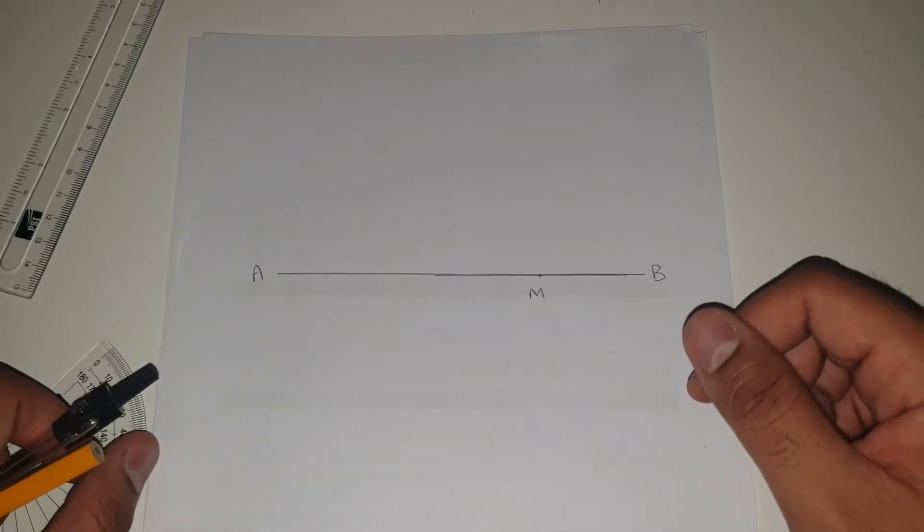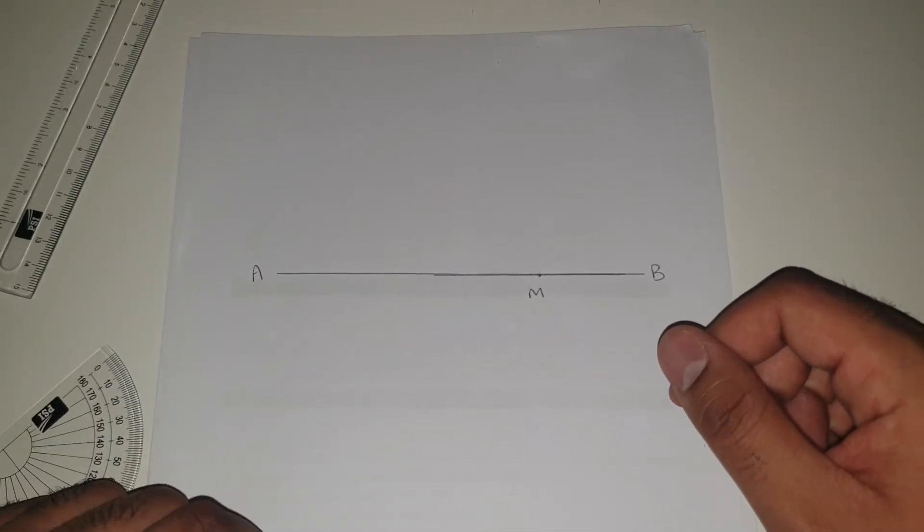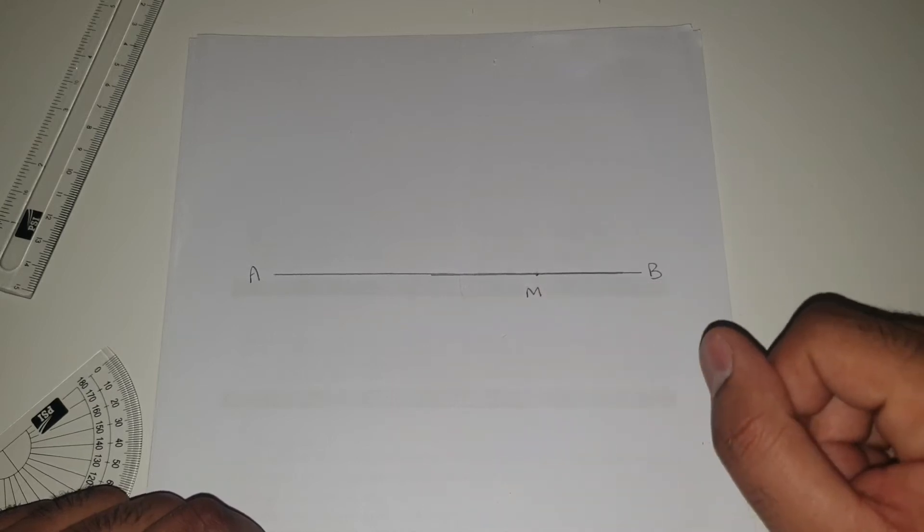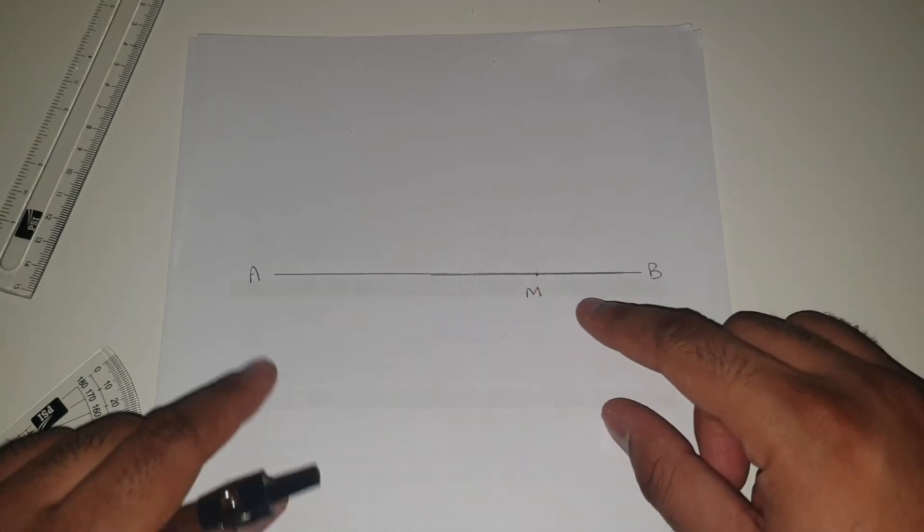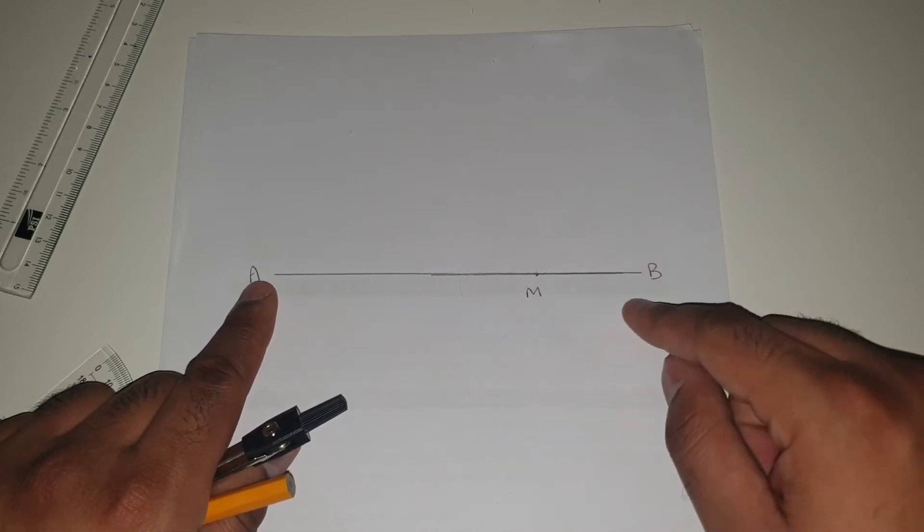In this video, I'm going to show you how to construct the perpendicular bisector of a given point on the line. So the first thing you notice is that M is not halfway between A and B. It's closer to B.